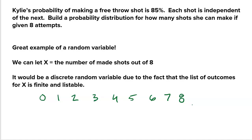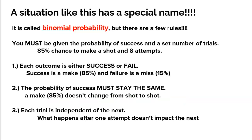At first glance, this seems to be a pretty standard random variable problem where we have a discrete random variable — we're looking at the number of shots that she makes out of eight attempts. But this is actually a very special type of random variable. In fact, it's so special we give it its own name: it's a binomial random variable, which leads to binomial probabilities.